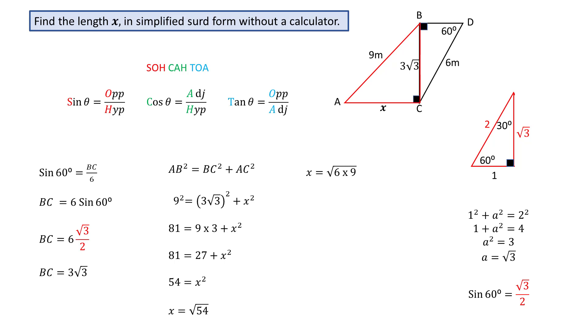To simplify the surd, write 54 as 6 times 9, which can be written as root 6 times root 9. Since the square root of 9 is 3, x can be written as 3 root 6, which is the answer to the problem.